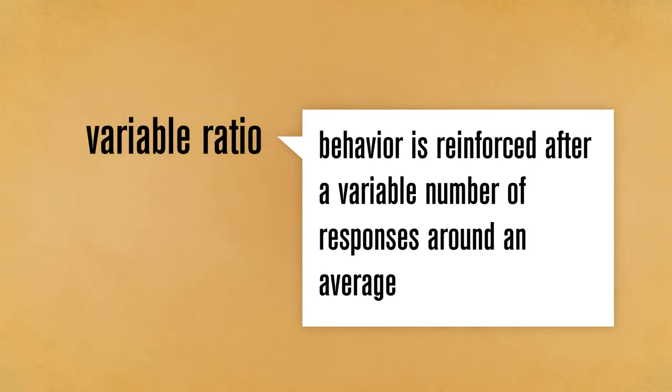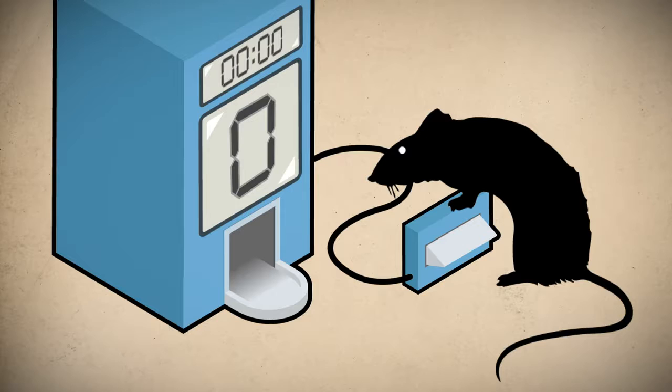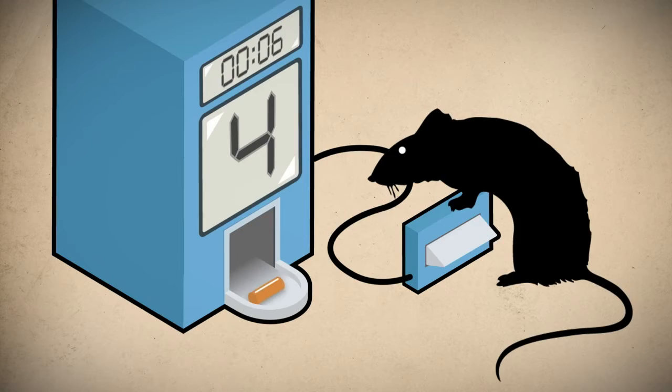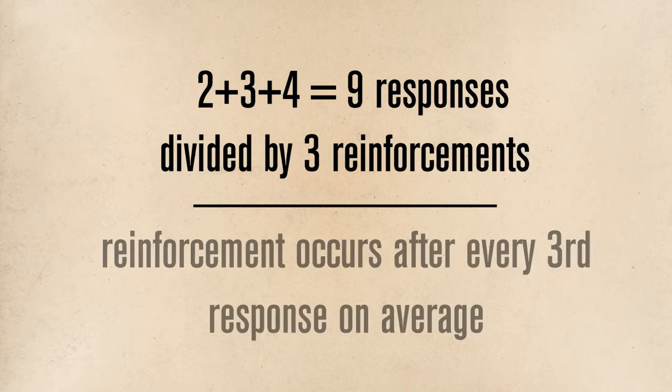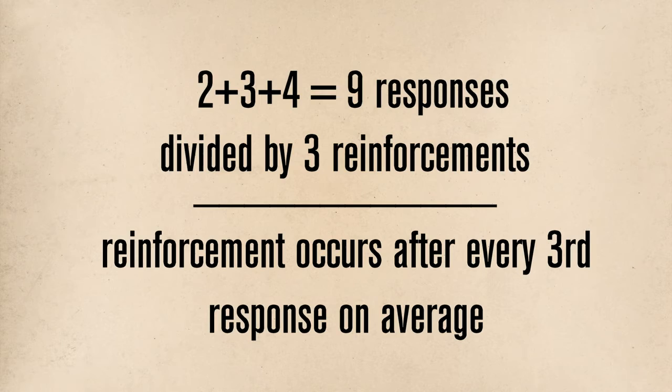With a variable ratio schedule, behavior is reinforced based on an average number of responses. For example, with a variable ratio of three, reinforcement may take place after two responses, then four responses, then three. If we divide the total number of responses — nine — by the total number of reinforcements — three — we have reinforcement of every third response on average. But the exact number of responses required before reinforcement is different each time.